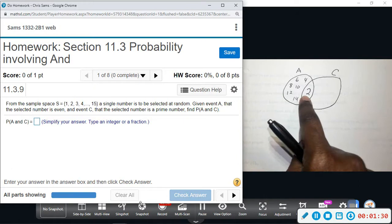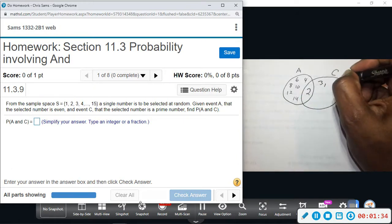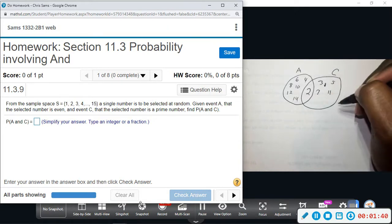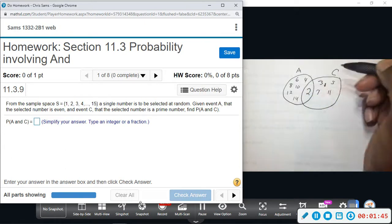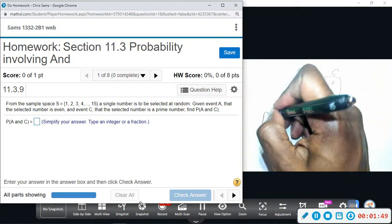Alright, C consists of the other prime numbers, so that would be 3, 5, 7, 11, and that would be it. So these are prime. The intersection consists of the overlap, so that's only one number, the number two out of 15.